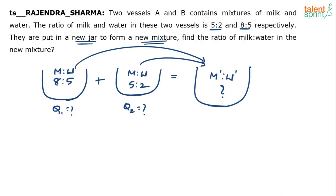Most of you have actually tried to add the ratios. If the ratio of milk to water is 8:5 here, I can say the fraction of milk is 8 out of 13. Here the fraction of milk is 5 out of 7.